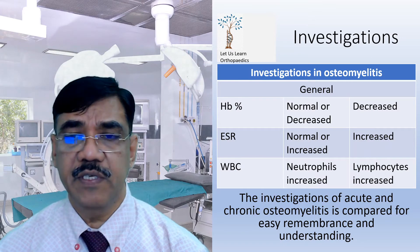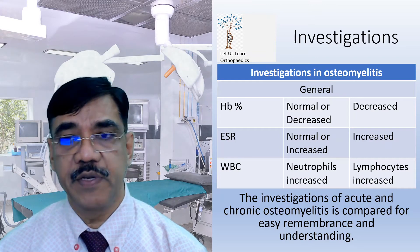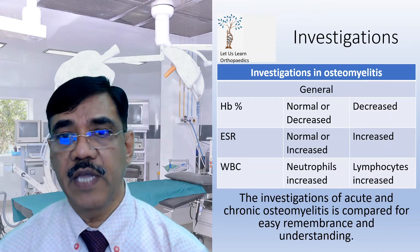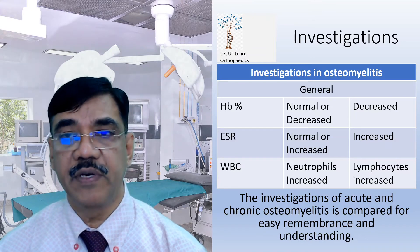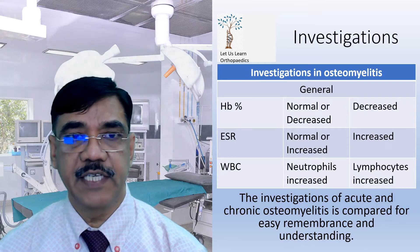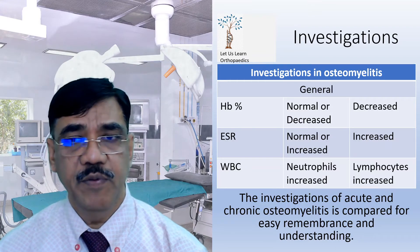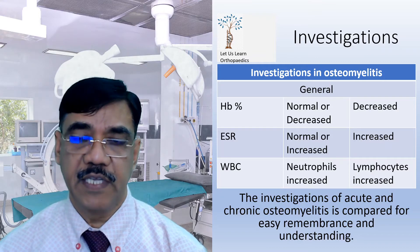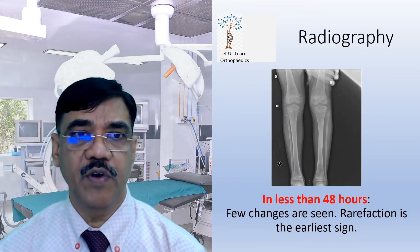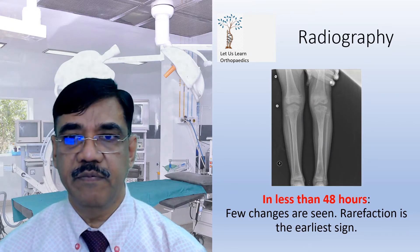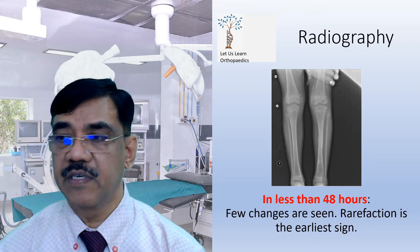Investigation-wise, acute and chronic osteomyelitis are compared in this table for easy understanding. In acute osteomyelitis, Hb% may be normal or decreased; in chronic osteomyelitis it is often decreased. ESR in acute osteomyelitis may be normal or increased; in chronic, it is often increased. WBCs: in acute osteomyelitis, neutrophils are increased, whereas in chronic osteomyelitis, lymphocytes are increased. Radiology: in less than 48 hours, very few changes are seen — only rarefaction is the earliest sign.